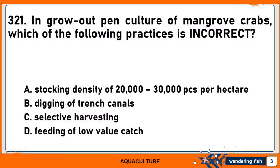In grow-out panculture of mangrove crabs, which of the following practices is incorrect? A. Stocking density of 20,000 to 30,000 pieces per hectare. B. Digging of trench canals. C. Selective harvesting. Or D. Feeding of low-value catch. The correct answer is A. Stocking density of 20,000 to 30,000 pieces per hectare.